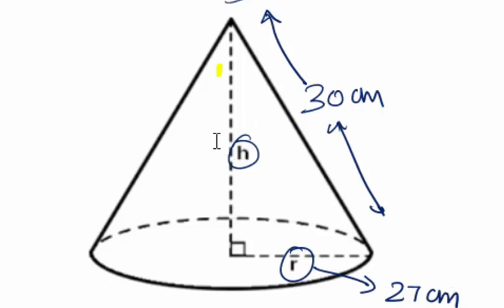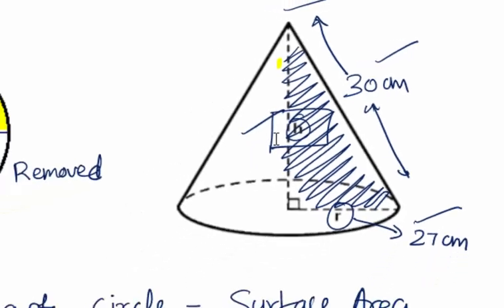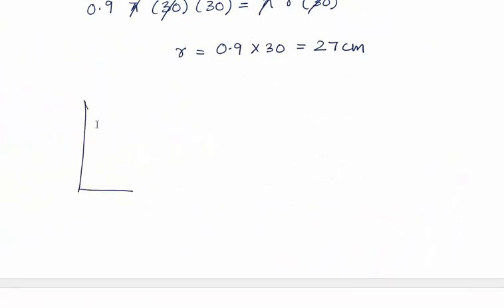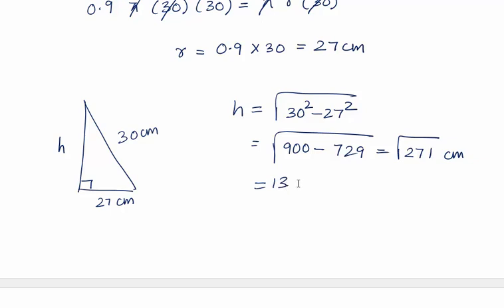Now we have to find the height. This forms a right-angle triangle where the slant height is the hypotenuse. The slant height is 30 centimeters and the radius is 27 centimeters, so h = √(30² − 27²) = √(900 − 729) = √171 ≈ 13.08 centimeters.